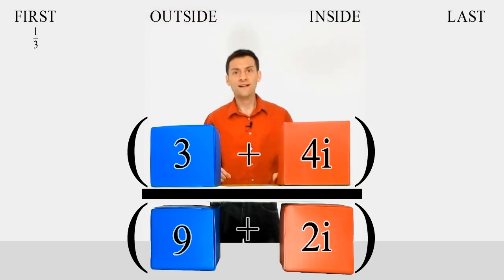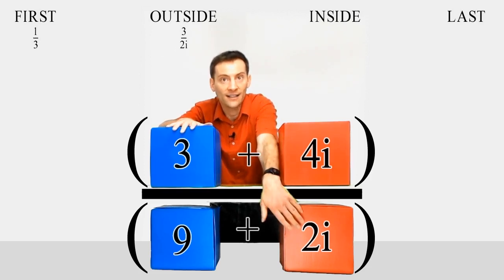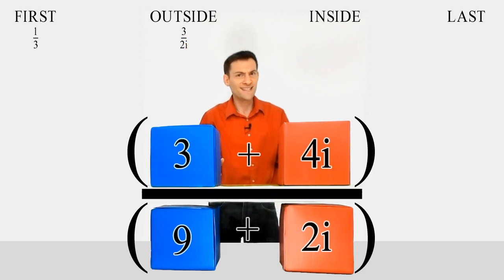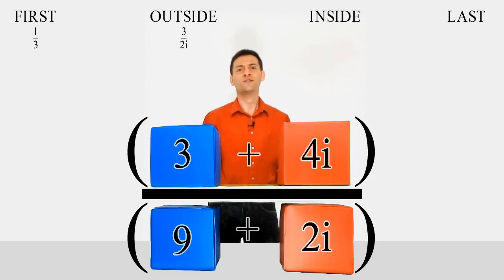If we divide the two outside terms, 3 divided by 2i, the i ends up on the bottom as the denominator. This makes things very awkward. We've already had enough trouble with i being the square root of minus 1, let alone having to introduce a new term to cope with 1 over the square root of minus 1. If only there was some trick we could use to get the i out of the denominator. Well as it happens, there is. We use something called the complex conjugate.